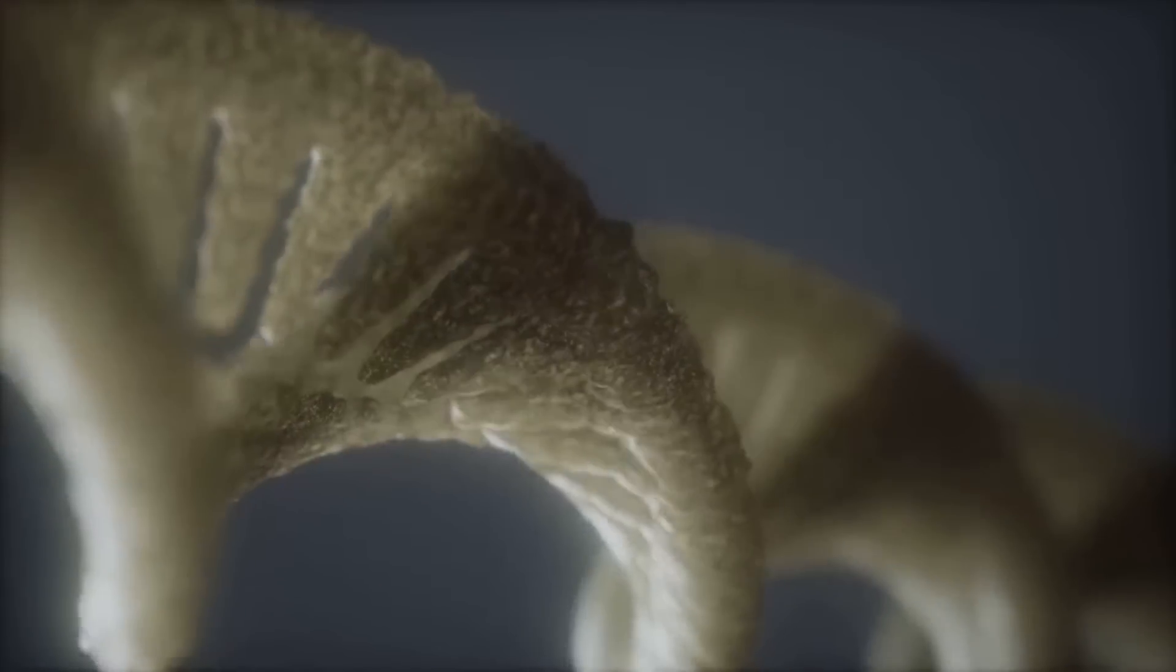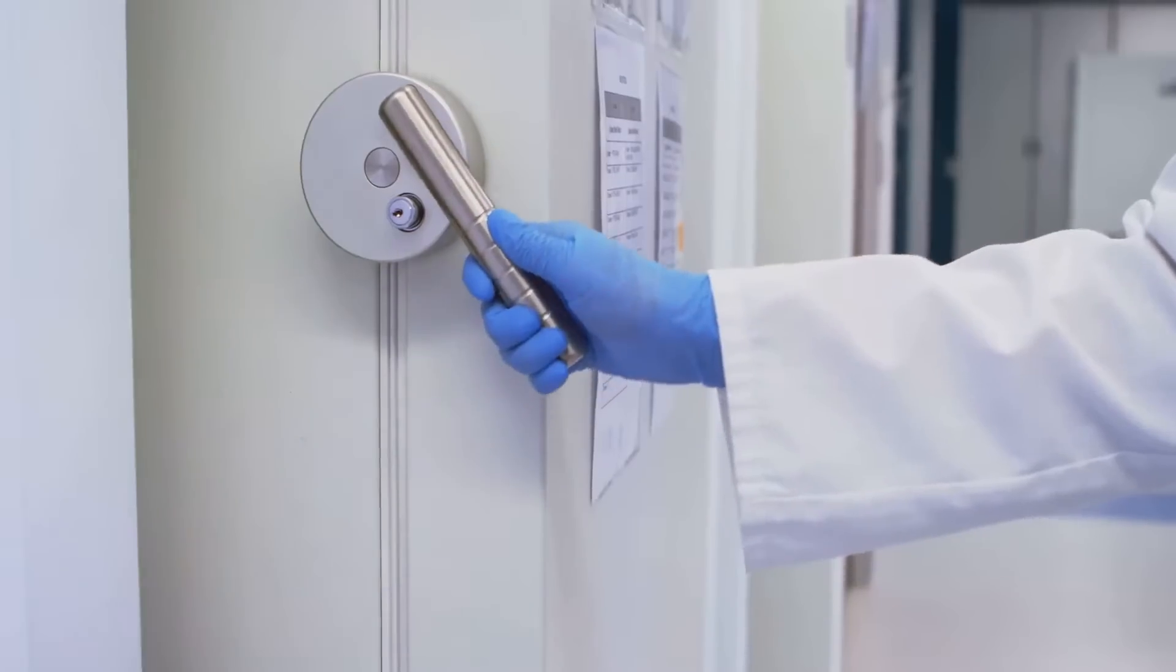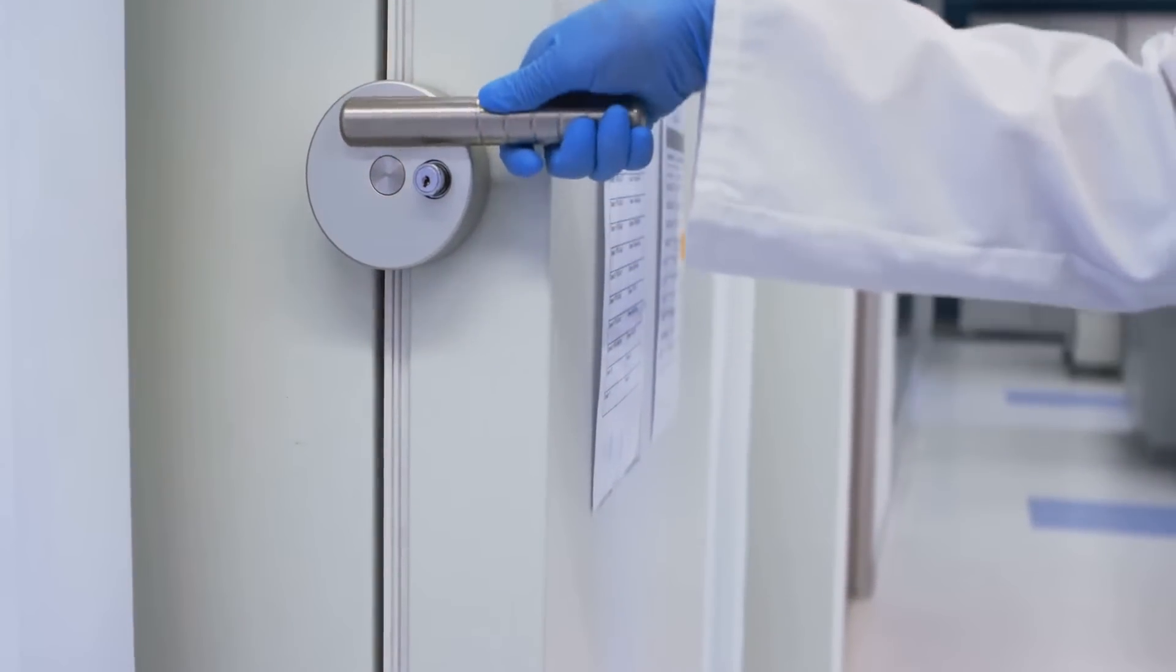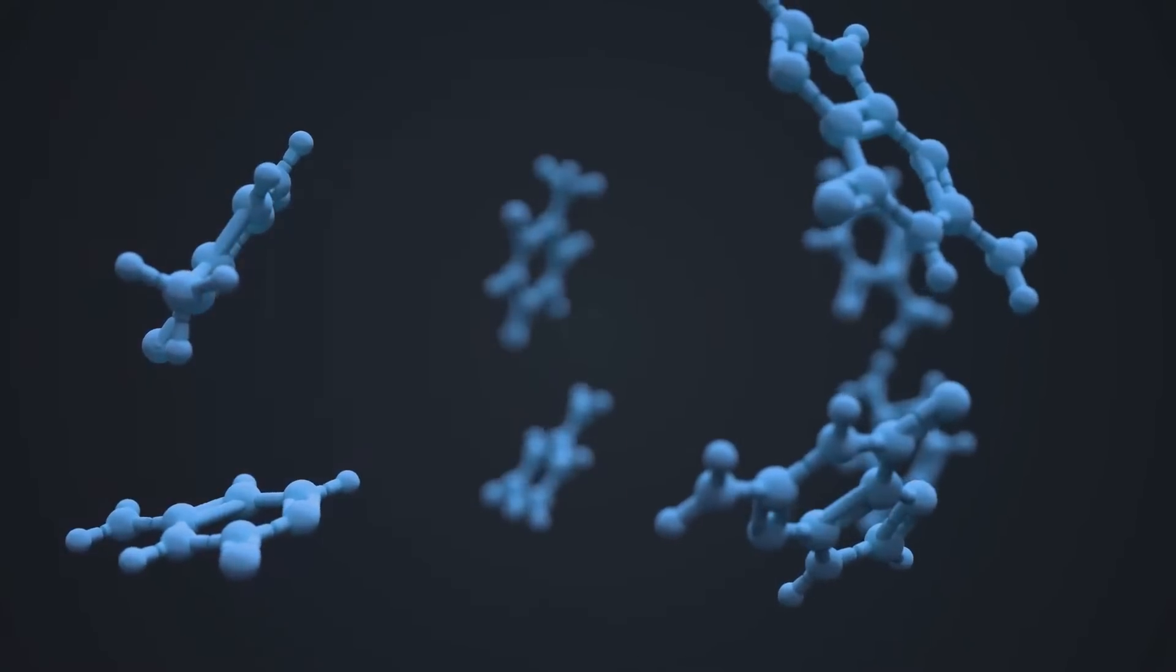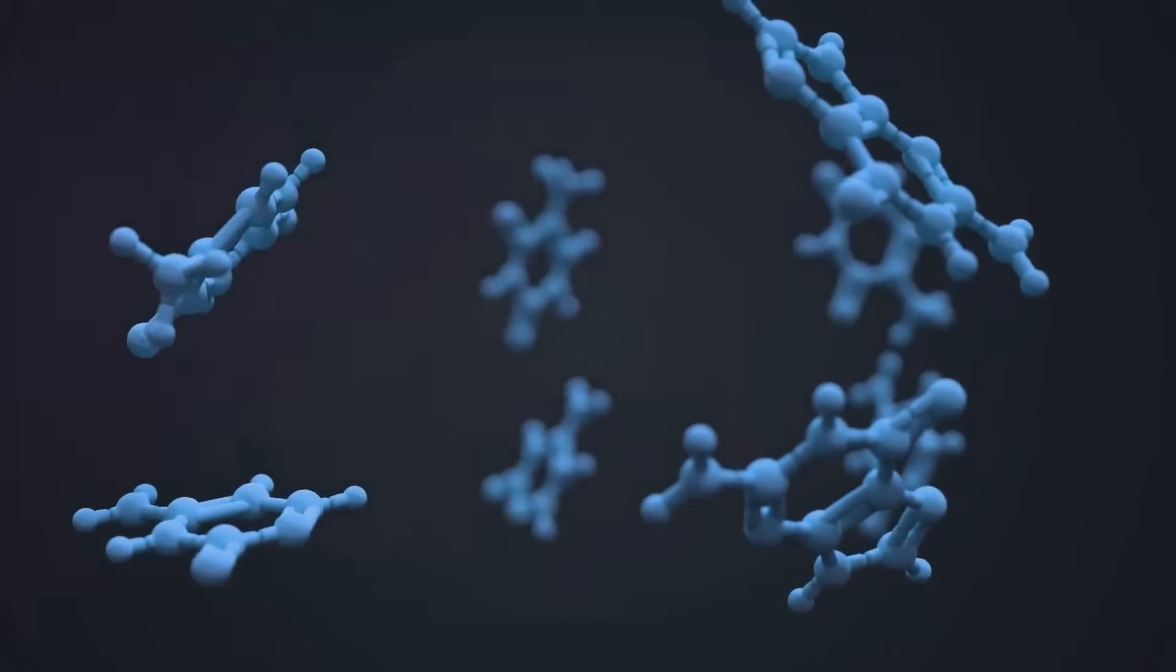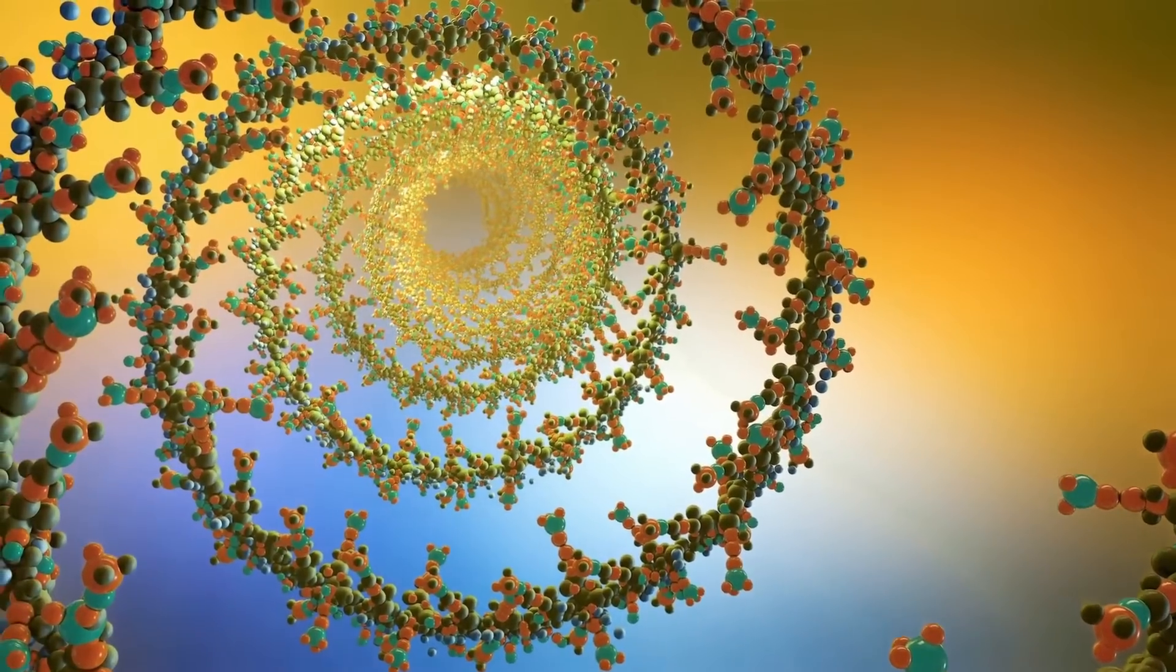Think of DNA as a master chef's cookbook, locked away in the restaurant's office. The chef wants to make a specific dish, but can't leave the office. So they use RNA, a messenger, to copy the recipe from the cookbook and bring it to the cooks in the kitchen.